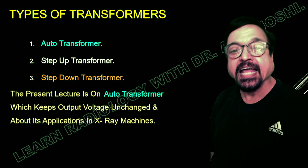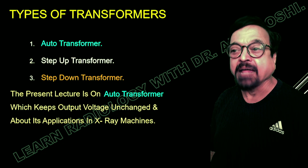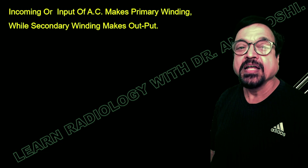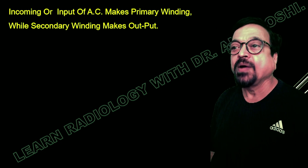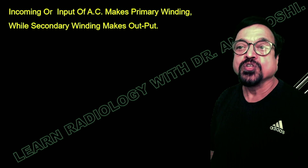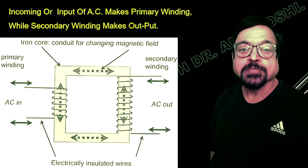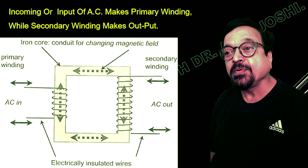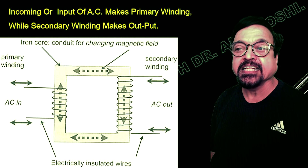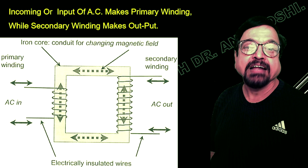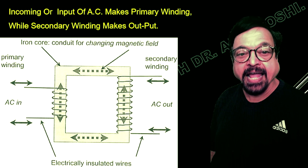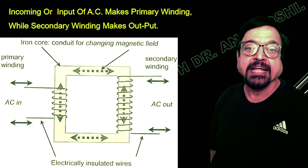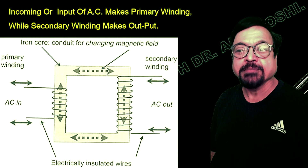When we look at the entire x-ray unit circuit diagram, we need to understand that the input is usually AC — alternating current — which makes the primary winding, while the secondary winding provides the output. The electricity supply is applied to the primary winding; in India it is typically 240 volts at 50 Hz. Depending on the ratio of primary to secondary windings, you can have an auto transformer, step-up, or step-down configuration.